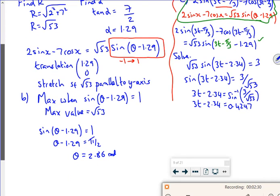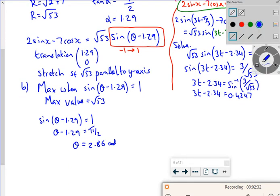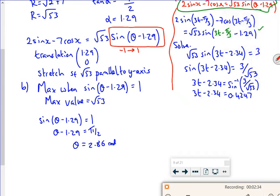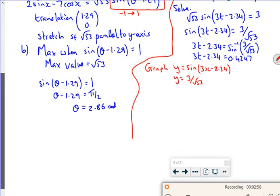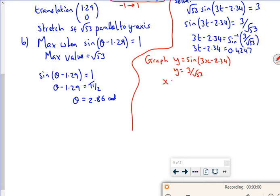But then what I want to do is just graph. So I've done my menu 1 to get the initial value. So I'm going to graph y equals sine of 3x minus 2.34, y equals 3 over root 53. Set my x value. So it's 0 to π in radians. So I've got to be in radians. So I'm going to set my x value from 0 to π.